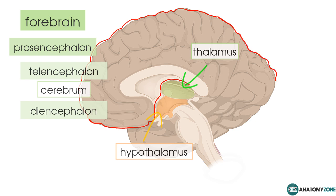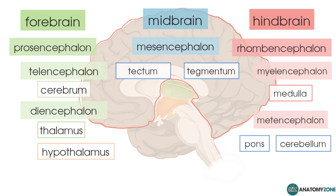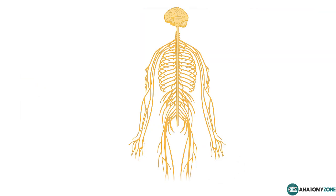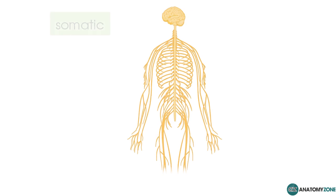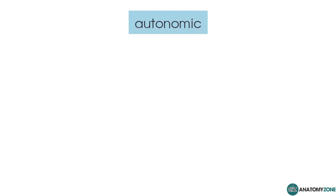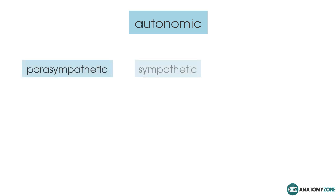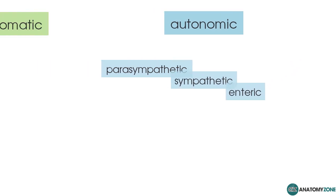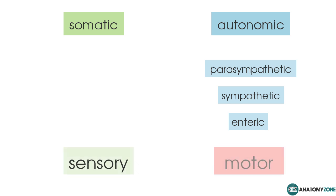That's a brief run through the basic anatomical organisation of the central nervous system. Returning to the peripheral nervous system, it is split into two parts: the somatic part and the autonomic part. The autonomic part can be further subdivided into the parasympathetic, the sympathetic, and the enteric nervous system. Within these components, you also have sensory and motor divisions.